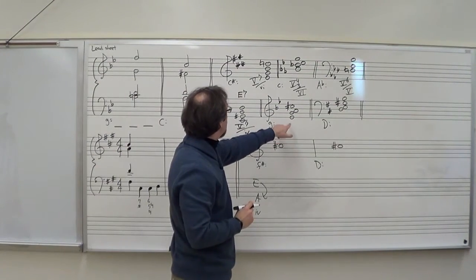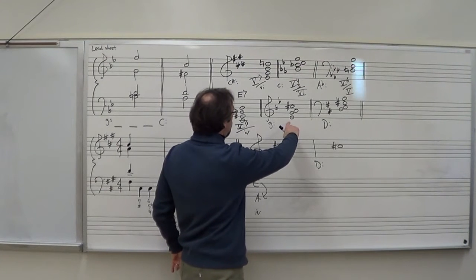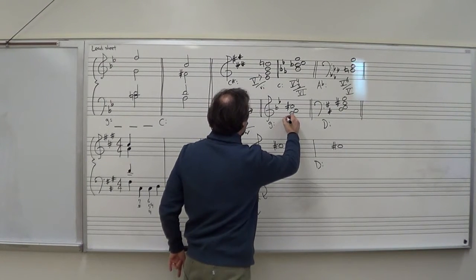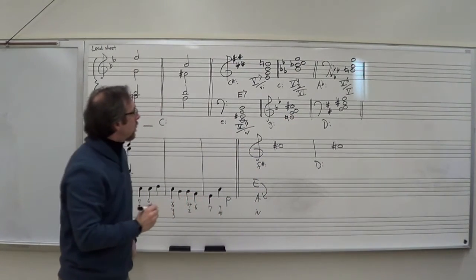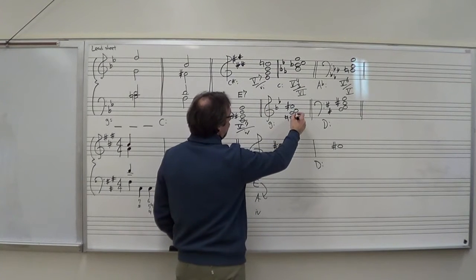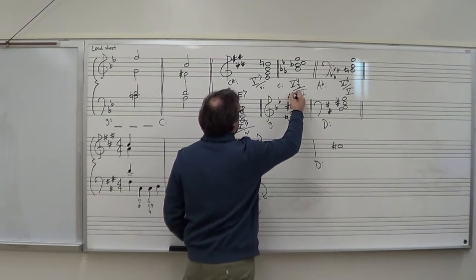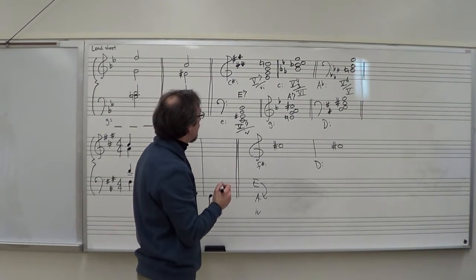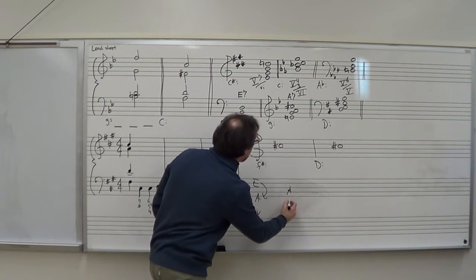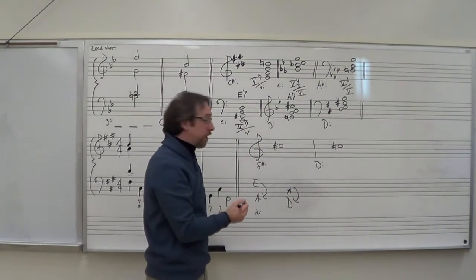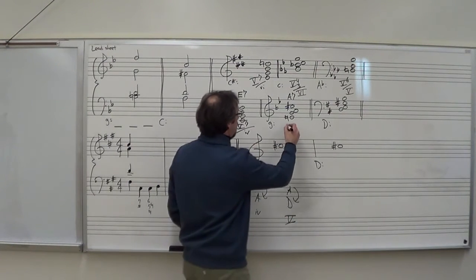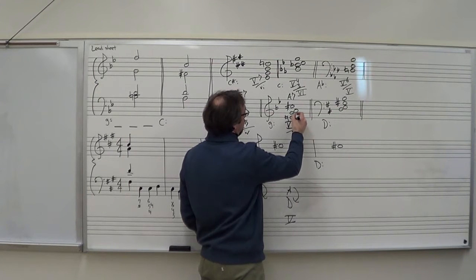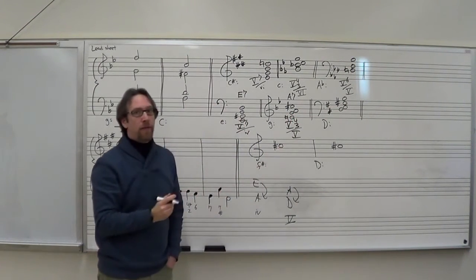Our key is G minor. We have A, C-sharp, E, G — which would be an A7. A7: go down a 5th, that would be D. D is 5 in the key of G, and 5 is major. So this would be a 5 chord of 5. It's in second inversion, so we put 4-3: 5-4-3 of 5.